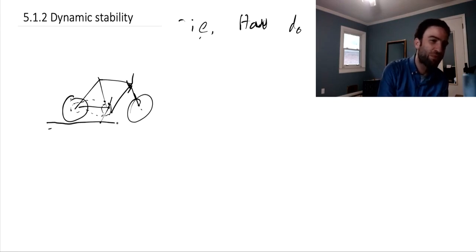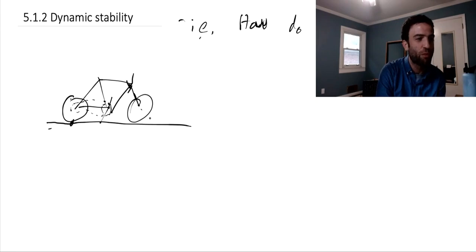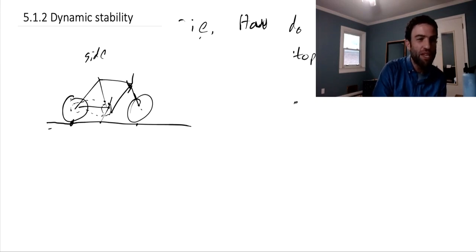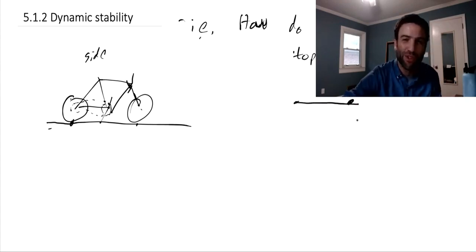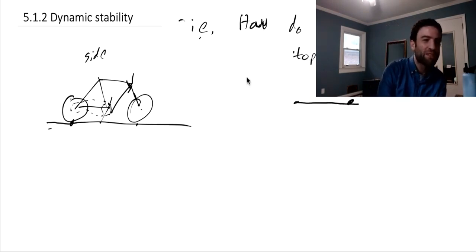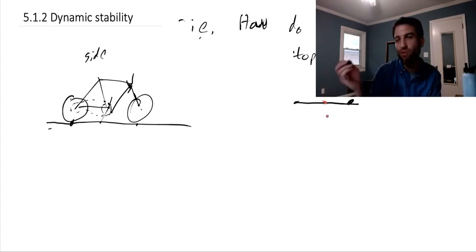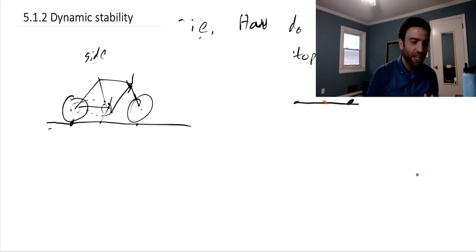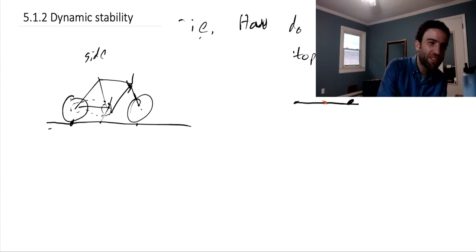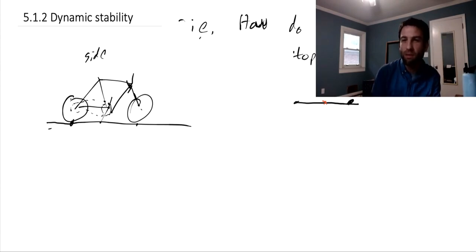It seems like bicycles stay upright in spite of what we just talked about. If I think about the base of support of this bicycle from above, the wheels just touch in two points - the base of support is just a line. At best, you very precariously position the center of mass directly above this line, but even then it will be in a state of unstable static equilibrium. Despite this, moving bicycles manage to be very stable. How and why is that?